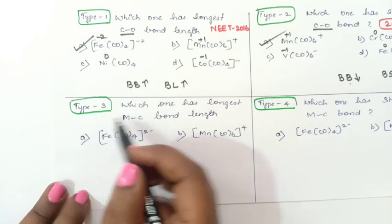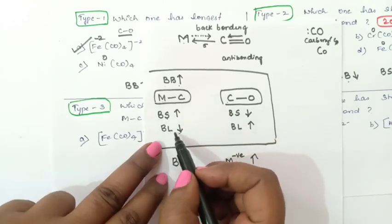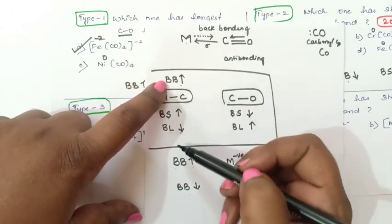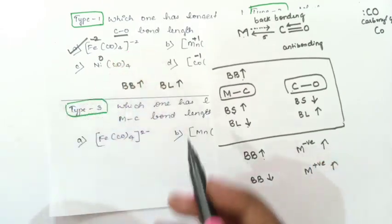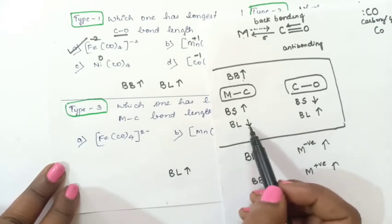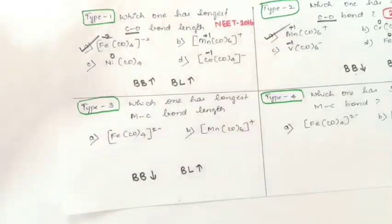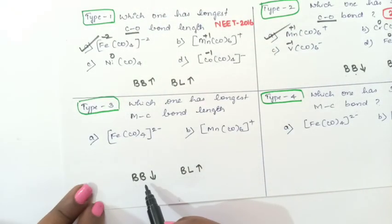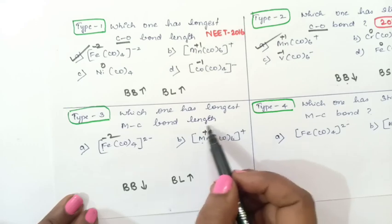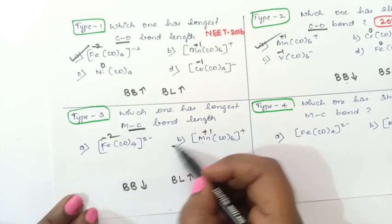Third type of question: which one has the longest MC bond length? For MC, bond length and backbonding are inversely proportional — bond length is more when backbonding is less. Backbonding is less when the metal has a positive charge. Fe has minus 2 charge and Mn has plus 1 charge. Mn has the positive charge, so backbonding will be less, and the MC bond length will be greater. Option B is the correct answer.